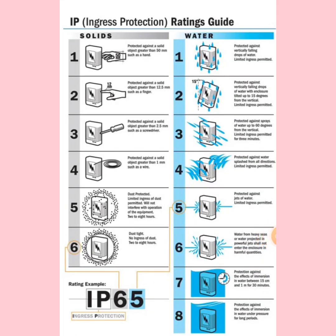Hello friends, today I am going to talk about a very peculiar topic: IP ingress protection system for our substations and industries. We usually purchase many enclosures wherein we have many pieces of equipment, and all these enclosures have one degree of protection called ingress protection rating. It usually has two numbers and is governed by IEC 60529, titled 'Degree of Protection Provided by Enclosures — IP Codes.'